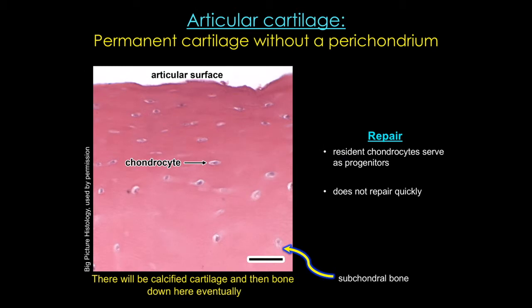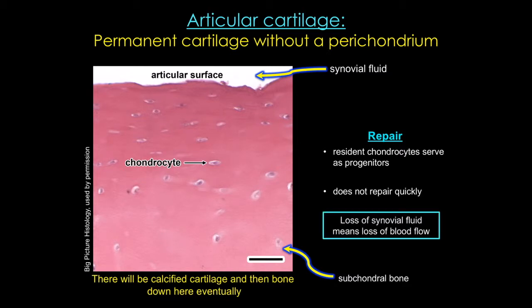Let's take a look at articular cartilage, the most common cartilage affected in osteoarthritis. Articular cartilage is a unique tissue between the ends of the bones and the joint. It lacks a perichondrium, meaning its only blood supply comes from the synovial fluid and from slight diffusion from subchondral bone. If we lose that synovial fluid, we lose the blood flow and the ability to repair.